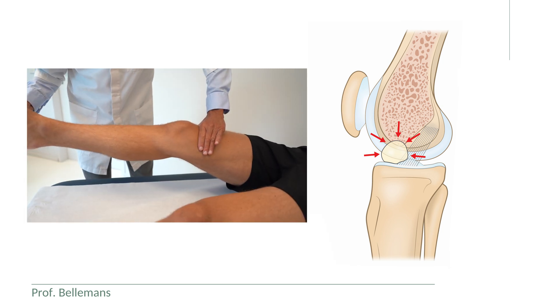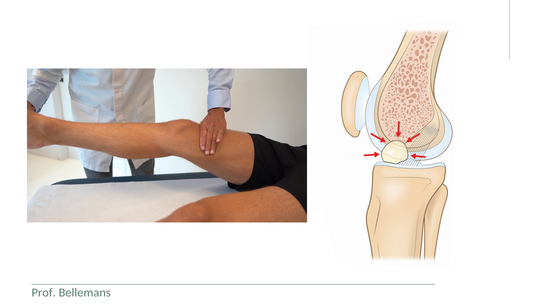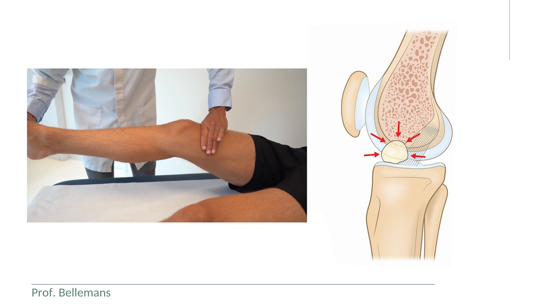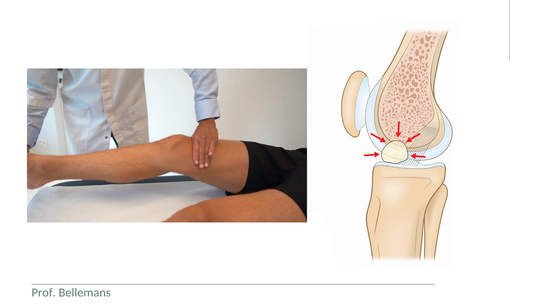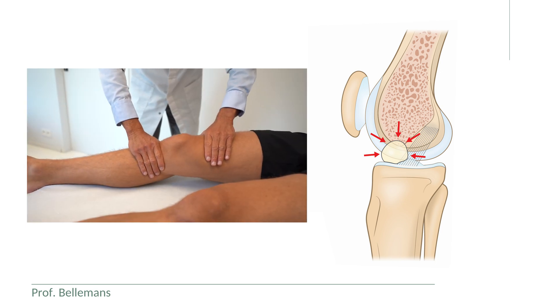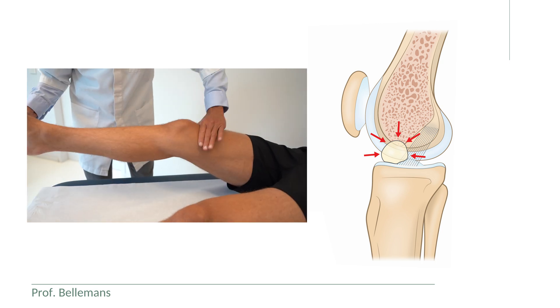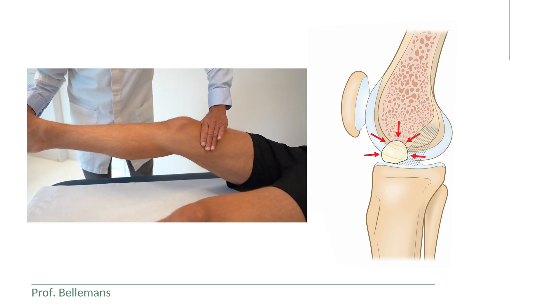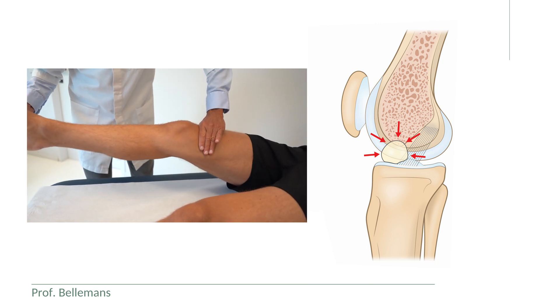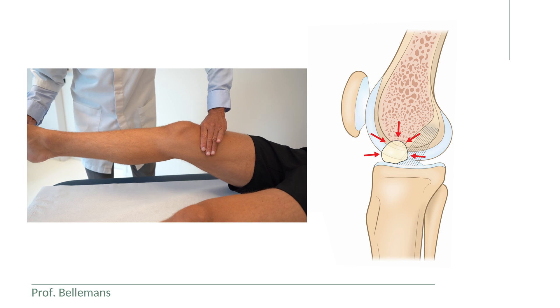The problem with the cyclops lesion is that it prevents full extension of the knee because it acts as a mechanical block. Full extension of the knee is obviously very important to achieve, as you need it for many activities of daily life.